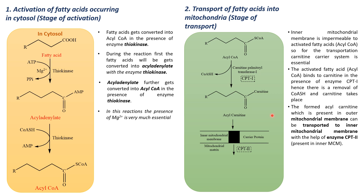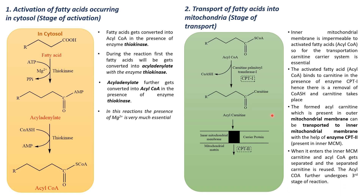CPT-2 helps transfer acyl carnitine from the outer mitochondrial membrane into the inner mitochondrial matrix. Once inside the matrix, a separation takes place between carnitine and acyl coenzyme A. The separated carnitine returns to the cytosol and combines again with acyl coenzyme A to help transport other molecules into the mitochondrial matrix. The formed acyl coenzyme A then enters the next stage.